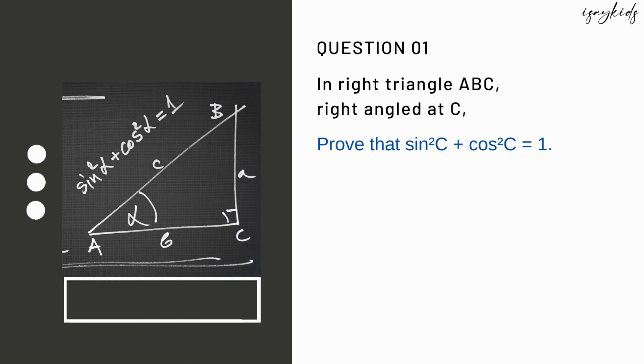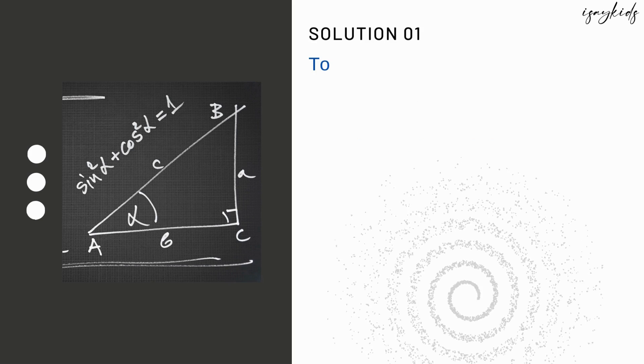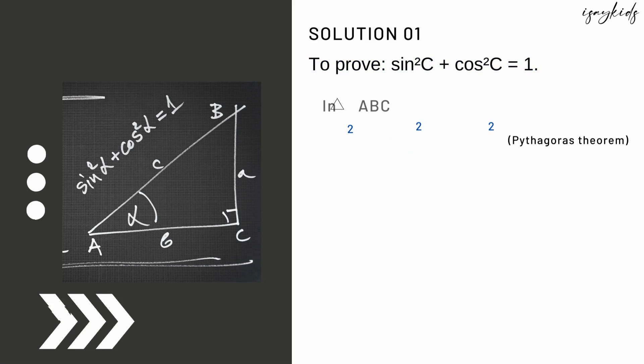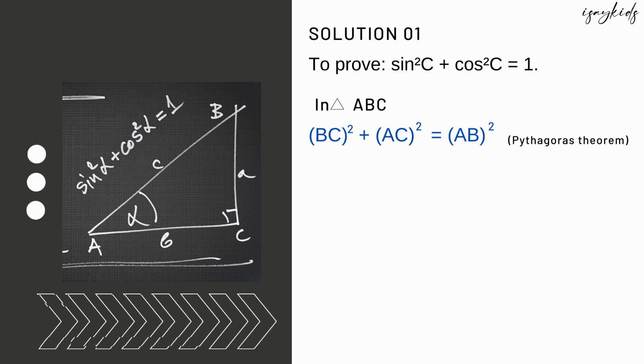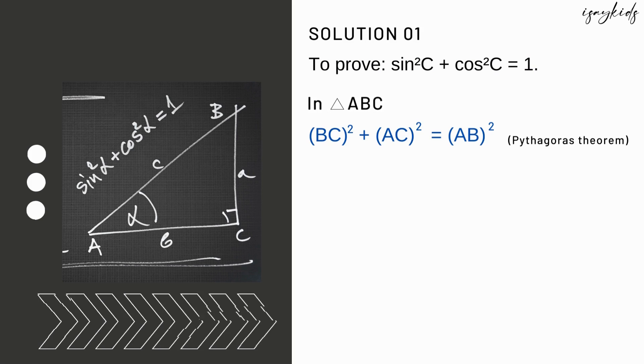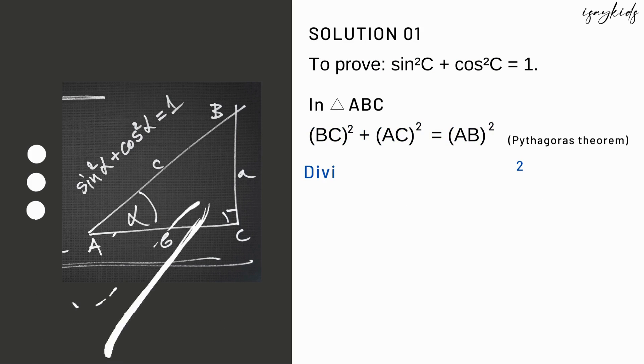In triangle ABC, by Pythagoras theorem we know that BC² + AC² = AB². Now let's divide both left hand side and right hand side by AB².